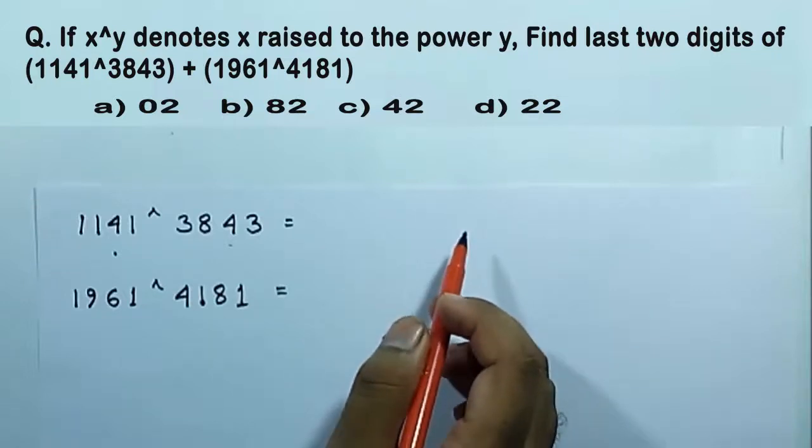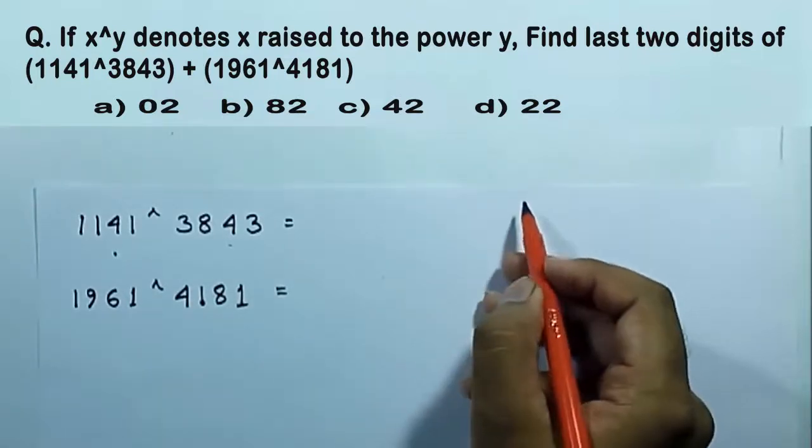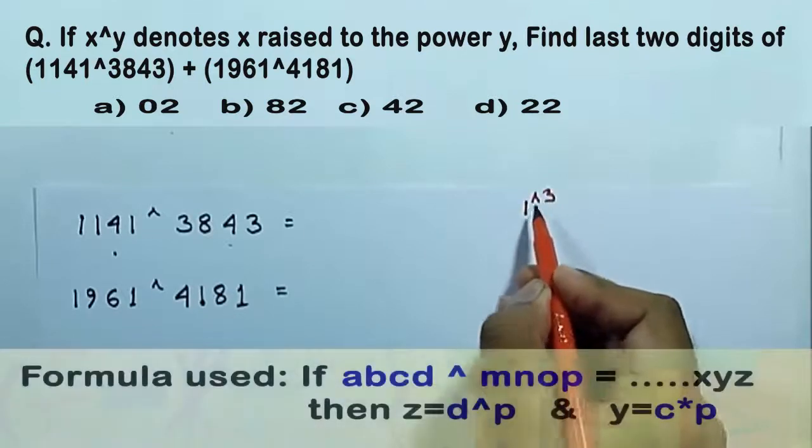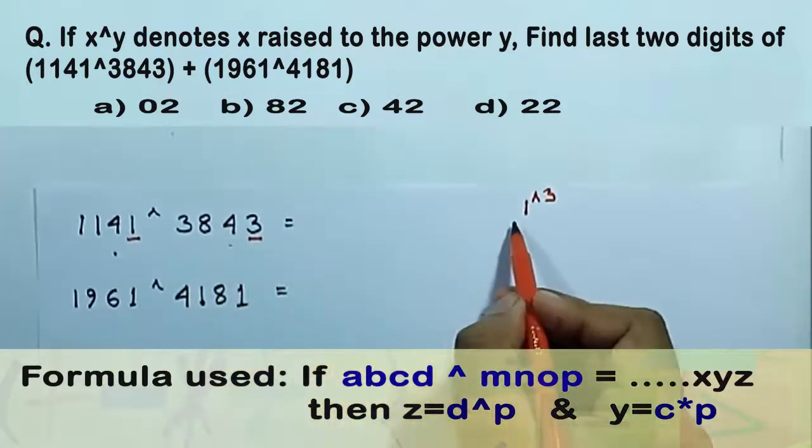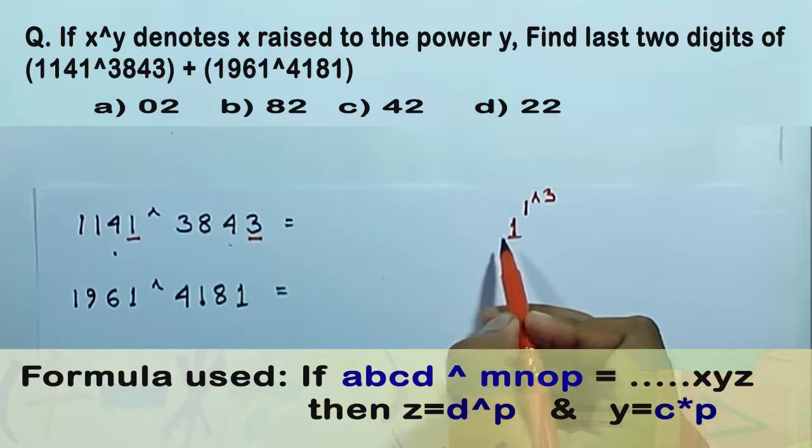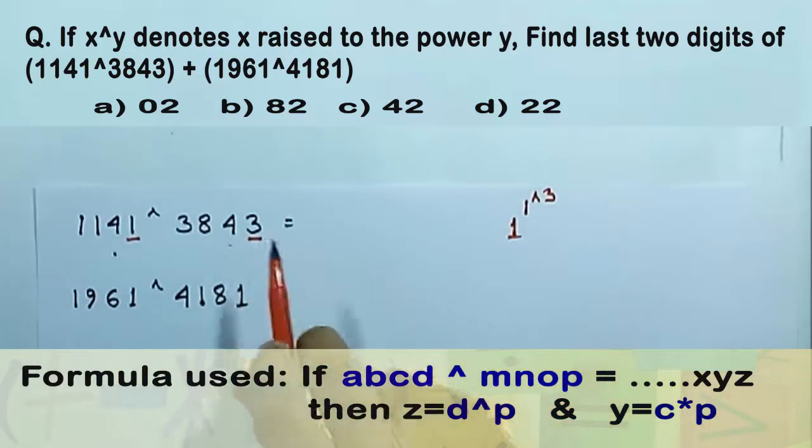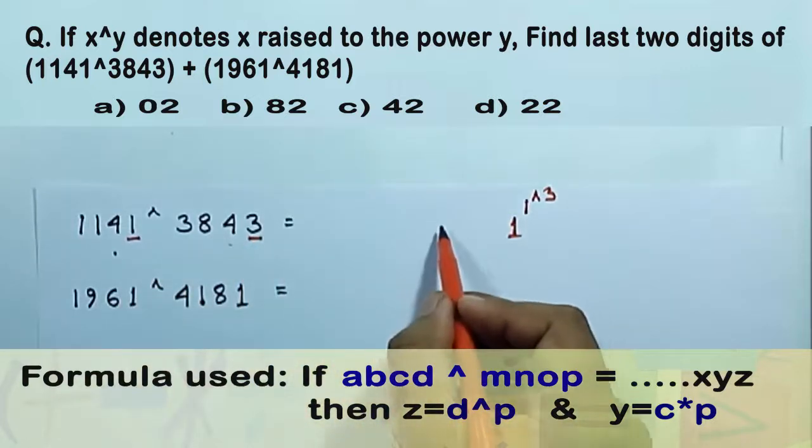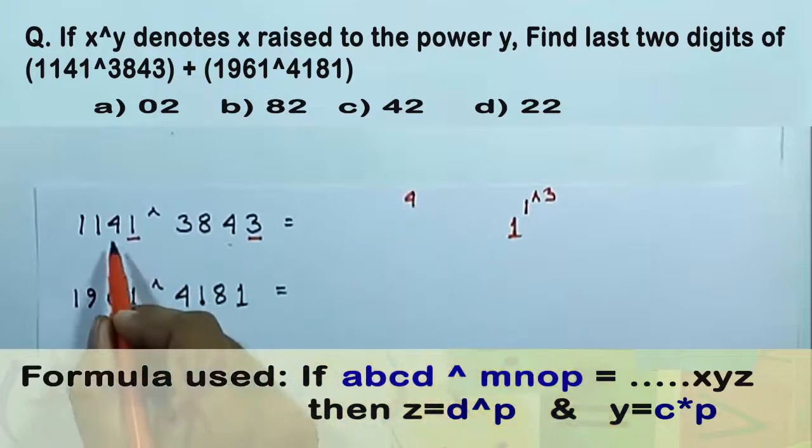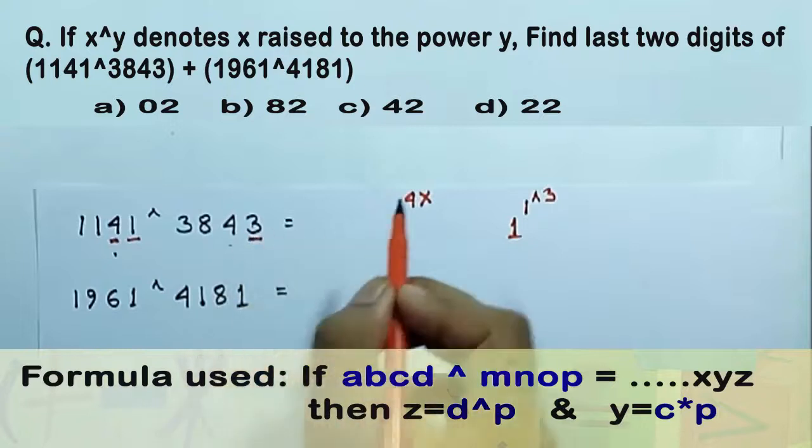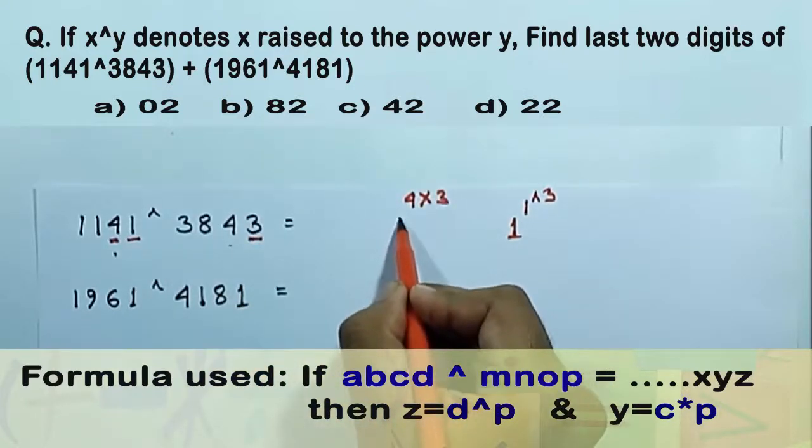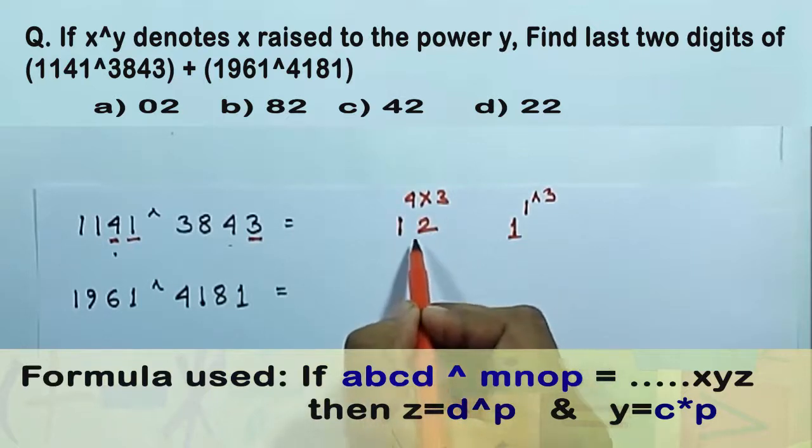To find the unit place digit, we have to find 1 to the power 3, which is 1. So the unit place digit will be 1 for this number. And our second last number will be 4, which is 4 multiplied by 3, which is 12. Now for 12, the unit place digit is 2.